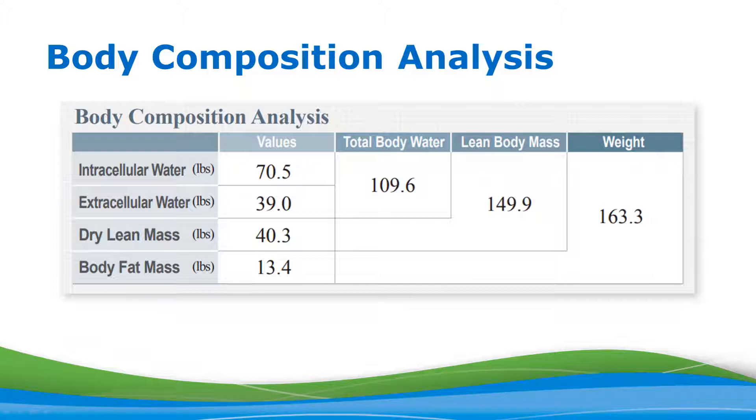The very first two values that you see are intracellular water and extracellular water. Intracellular water is the amount of body water held within all the cells of the body, and extracellular water is water outside the cells. We add these two values together to make up the total body water. In our example, we have the total body water as 109.6 pounds.